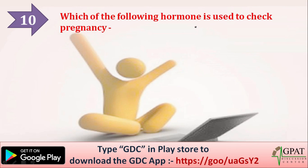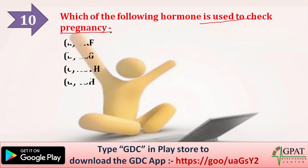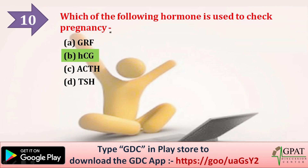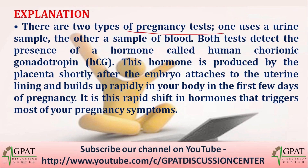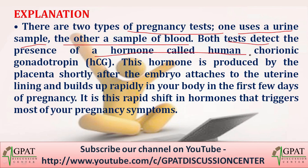Next question: which of the following hormones is used to check pregnancy? Options: A) GRF, B) HCG, C) ACTH, D) TSH. The correct answer is B, HCG. There are two types of pregnancy tests — one uses a urine sample and the other uses blood — and both tests detect the presence of the hormone human chorionic gonadotropin (HCG).